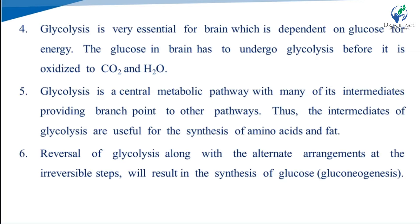Glycolysis is a central metabolic pathway, with many of its intermediates providing branch points to other pathways. The intermediates of glycolysis are useful for the synthesis of amino acids and fats. Reversal of glycolysis, along with alternate arrangements for the irreversible steps, results in the synthesis of glucose — this is known as gluconeogenesis.